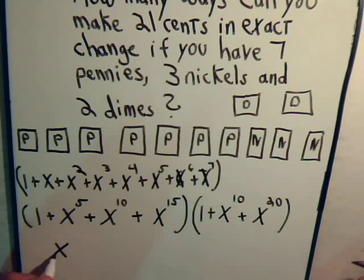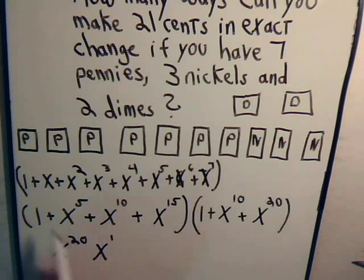For example, we could take x to the 20th times x. That would give x to the 21. So there's one way: x to the 20th times x to the first. That's x to the 21. So this would mean then two dimes plus one penny.